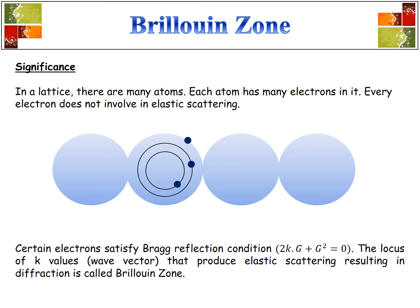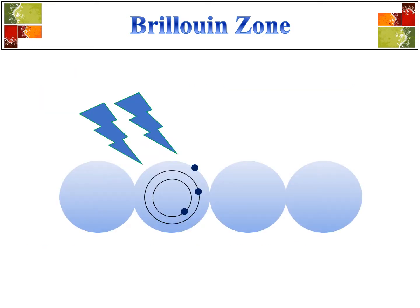So we are interested in those electrons — the K values of those electrons which will produce Bragg reflection. To visualize this, I have made a PowerPoint presentation. You can see there are many atoms here; actually there are four, and I have taken one which involves three electrons.